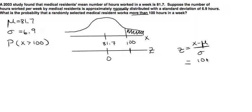For x we have 100 because that's what we're trying to standardize. The mean we already have written down as 81.7 and the standard deviation of 6.9. Now when we solve for that we get z equals 2.67.